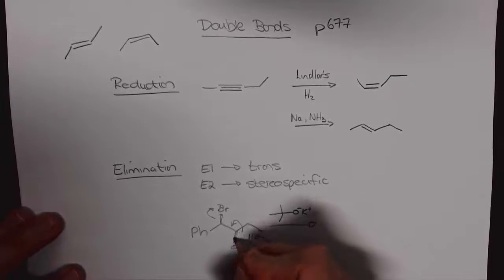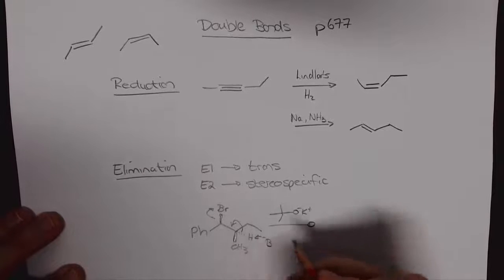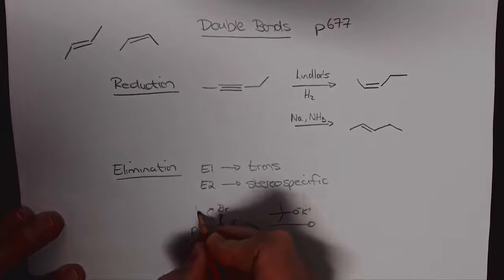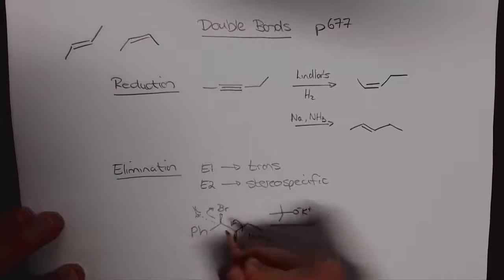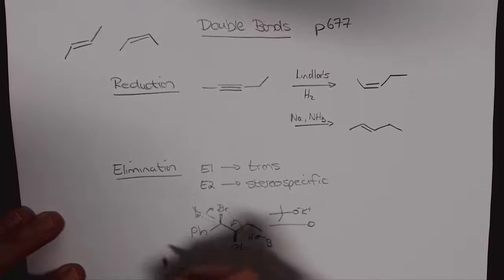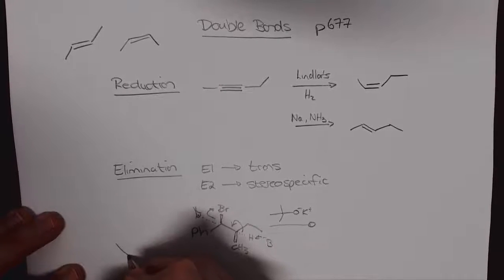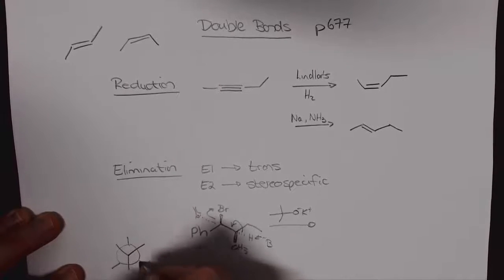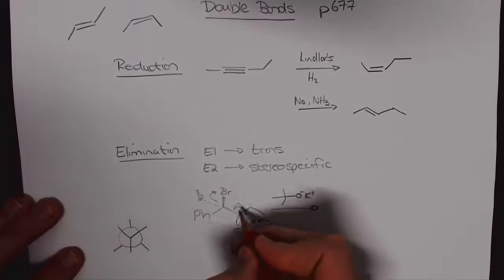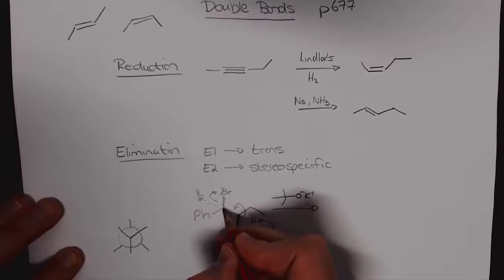We can work this out using Newman projections which is something that you should be able to do because we will use this later on in the course. So what we do here is we can look down this bond over there so we stick our eye right and we look down this bond and what do we see.